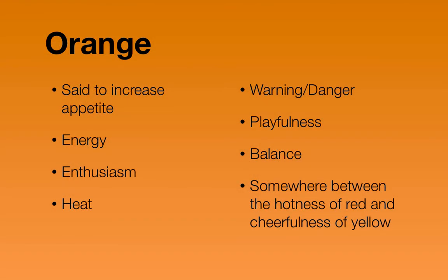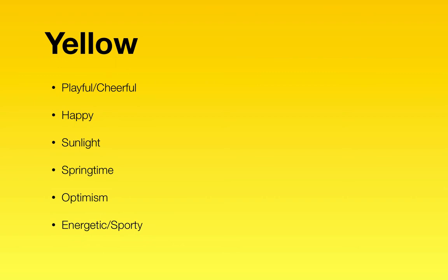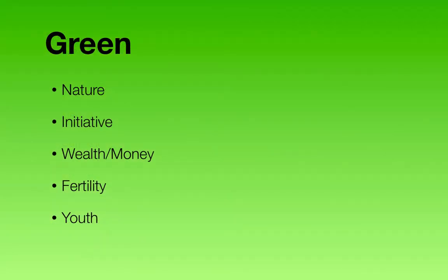Orange is said to increase appetite, energy, and enthusiasm. It feels like heat, warning or danger, playfulness — somewhere between the hotness of red and the cheerfulness of yellow. Yellow is playful, cheerful, and happy — it represents sunlight, springtime, optimism, and it's energetic and sporty. Green is said to represent nature, initiative, wealth and money, fertility, and youth.